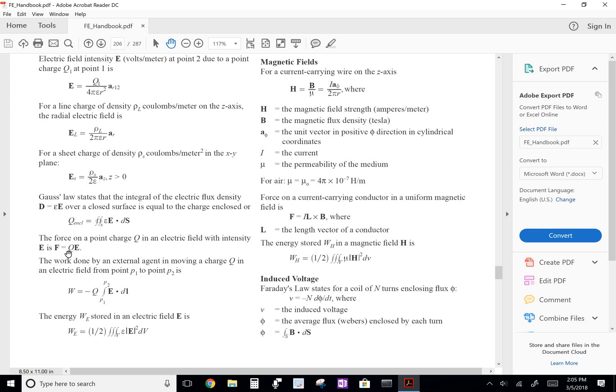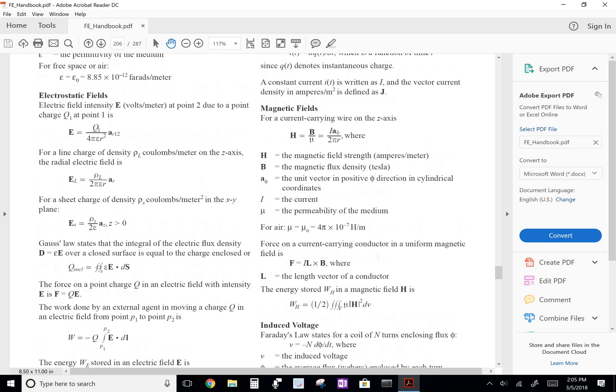The force on a point charge Q, which is this electron mass, in an electric field with intensity E is F equals QE. So that's the equation that we're going to use.